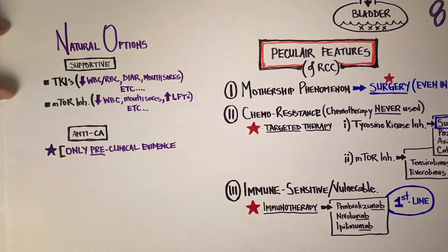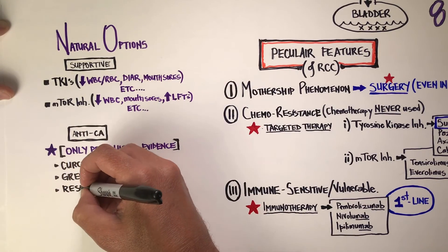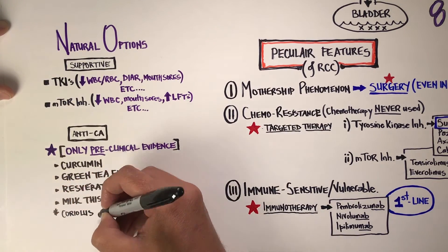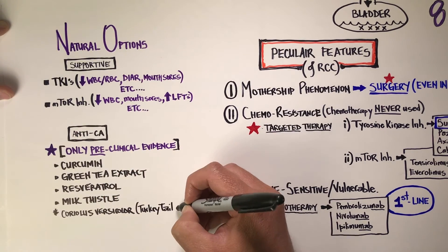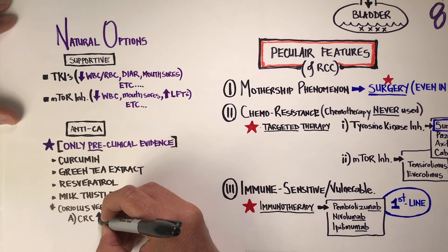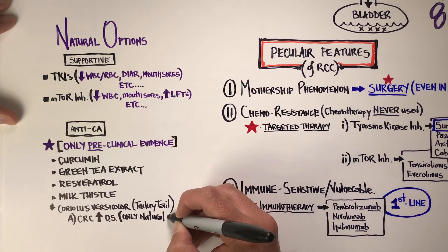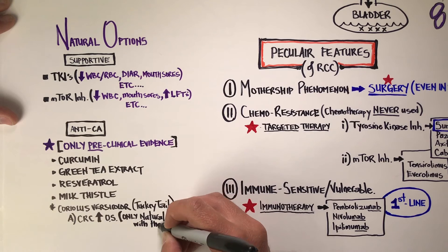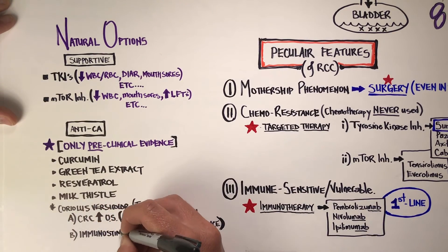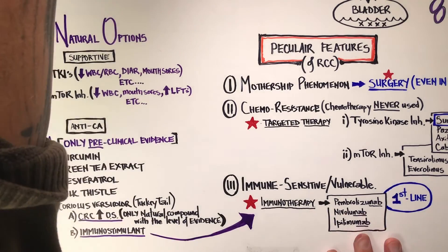For anti-cancer options, the evidence we have is only at the pre-clinical level — we do not have patient studies showing tumor shrinkage. The tools with strong evidence are curcumin, green tea extract, resveratrol, and milk thistle. I like milk thistle particularly with Afinitor and Torisel to protect liver function. The last one is turkey tail, Coriolus versicolor — it is the only natural compound showing increased overall survival in patients (research in colorectal cancer), and it is also an immune booster that can address the immune vulnerability unique to renal cell carcinomas.